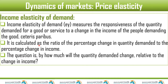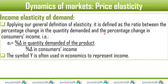Income Elasticity is calculated as the ratio of percentage change in quantity demanded to the percentage change in income — the same formula structure we were using, but now we use income instead of price. The question is: by how much will the quantity demanded change relative to the change in income? Applying our general definition, Income Elasticity of Demand (EY) equals percentage change in quantity demanded divided by percentage change in the consumer's income. Y stands for income.